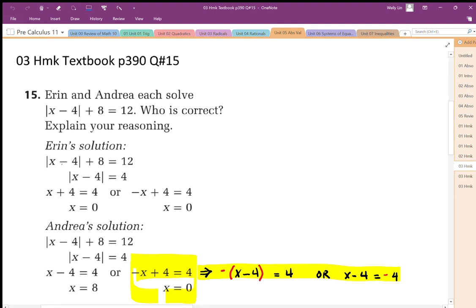So Erin's solution, it looks like she subtracted 8 from both sides, and then at this point it looks okay, but what she did, it looks like she absolute valued the negative 4, and then she just used the plus or minus for the x, and then she got the same solution for both.